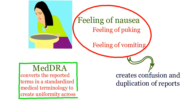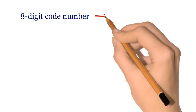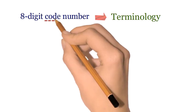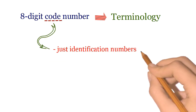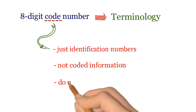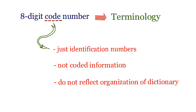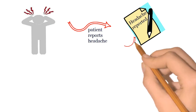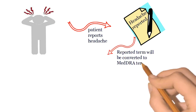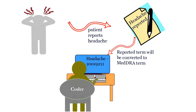In MedDRA, there is an eight-digit code number assigned to every terminology. These codes are just identification numbers and not coded information, and they do not reflect organization or dictionary. Coding takes the original verbatim describing an adverse event, such as a patient complaining about having a headache, and converts it to a MedDRA term such as 10019211 for headache.